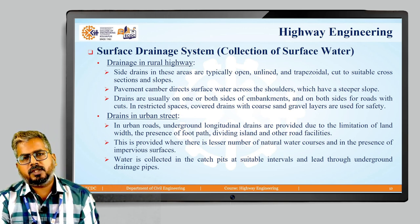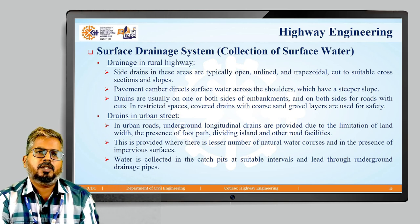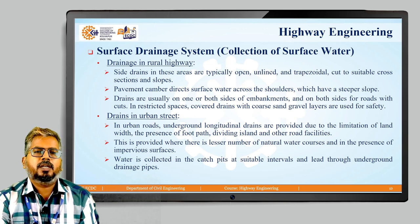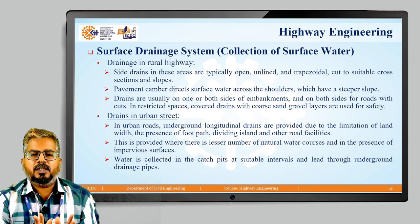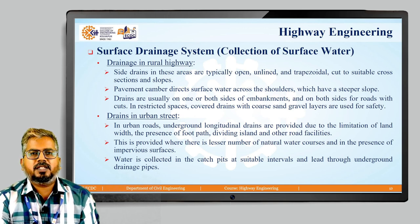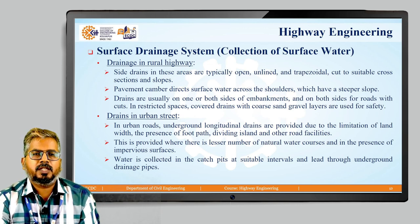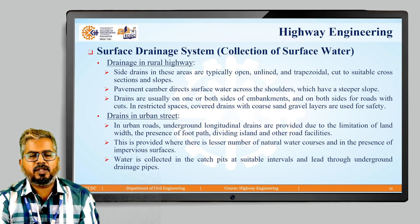Regarding surface drainage system collection of surface water, we have drainage in rural highways and drains in urban streets. In drainage for rural highways, the side drains in these areas are typically open, unlined and trapezoidal, cut to suitable cross sections and slopes. Pavement camber directs surface water across the shoulder, which has a steeper slope. Drains are usually on one or both sides of the embankments or on both sides of roads with cuts. In restricted spaces, covered drains with coarse sand gravel layers are used for safety.